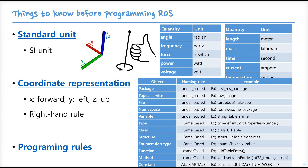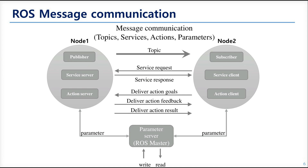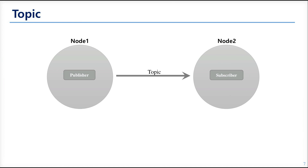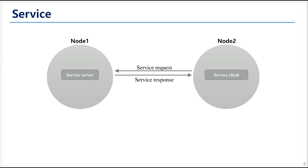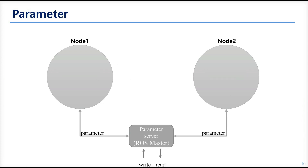Programming rules show how you should code the program, making it easier for other programmers to understand your code. Topic is a simplex communication that continues until the network between nodes is disconnected. Service is a duplex communication, but it runs only once per call. Action can be regarded as a mix of topic and service, often used for long-duration tasks. The parameter is an editable variable in ROS — if its value changes, it is saved into the ROS master, so you don't need to terminate and restart the node to apply new parameter values.